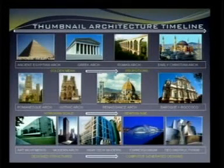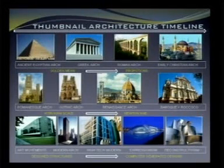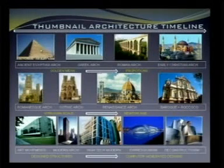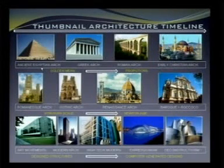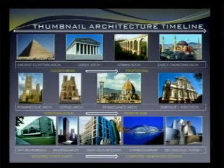So step by step we will go through it. Here you have an architecture timeline of man's creation right from 5000 years ago to today's structures. About 5000 years ago there was ancient Egyptian architecture — the pyramid — then Greek architecture, then Roman architecture. In the picture you can see Roman aqueducts — I have actually seen this in Rome, it is a phenomenal site.